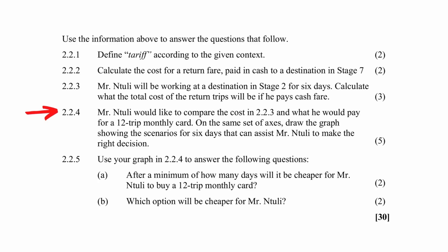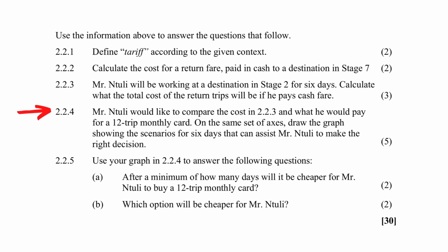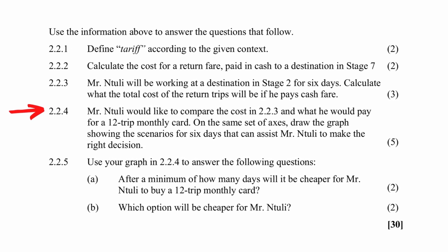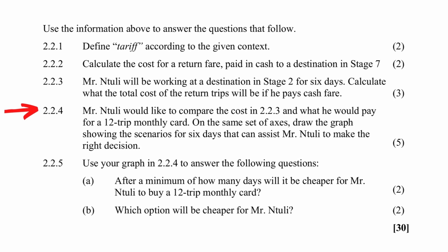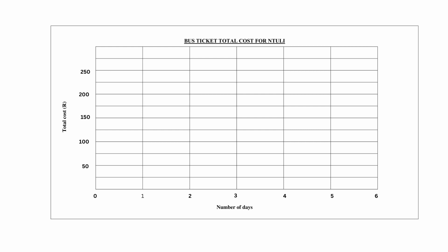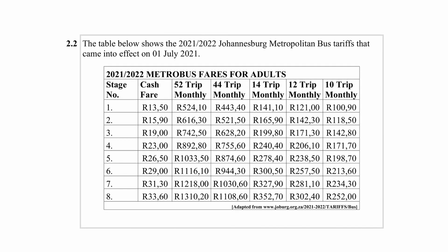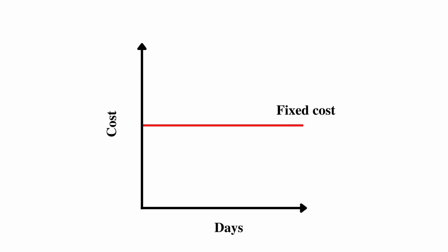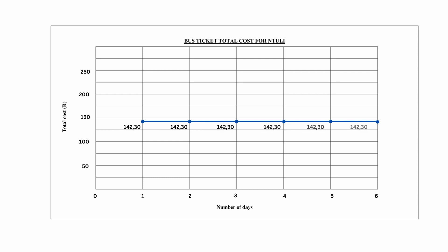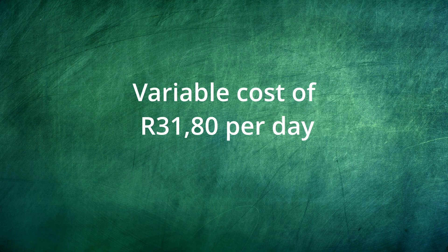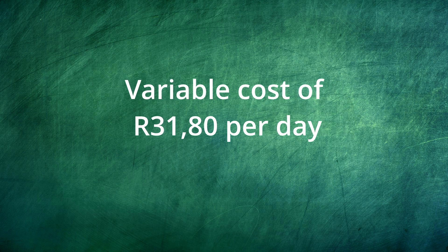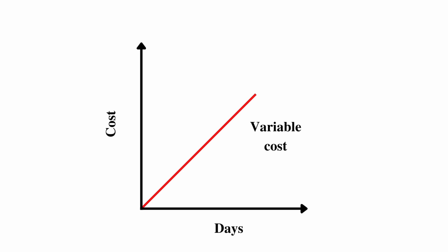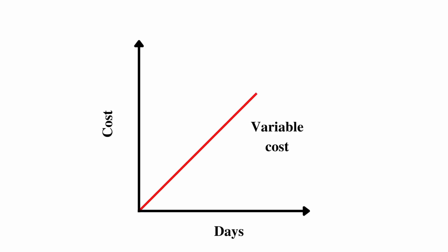In question 2.2.4, you are instructed to draw two graphs on the same set of axes to compare the cost from question 2.2.3 with what Mr. Nthuli would pay for a 12-trip monthly card. The easiest graph to draw is the 12-trip monthly fare — it's a fixed cost of R143.30 over six days. Fixed cost graphs are horizontal. The cash fare graph is a straight line with a variable cost of R31.80 per day, increasing with each additional day traveled.